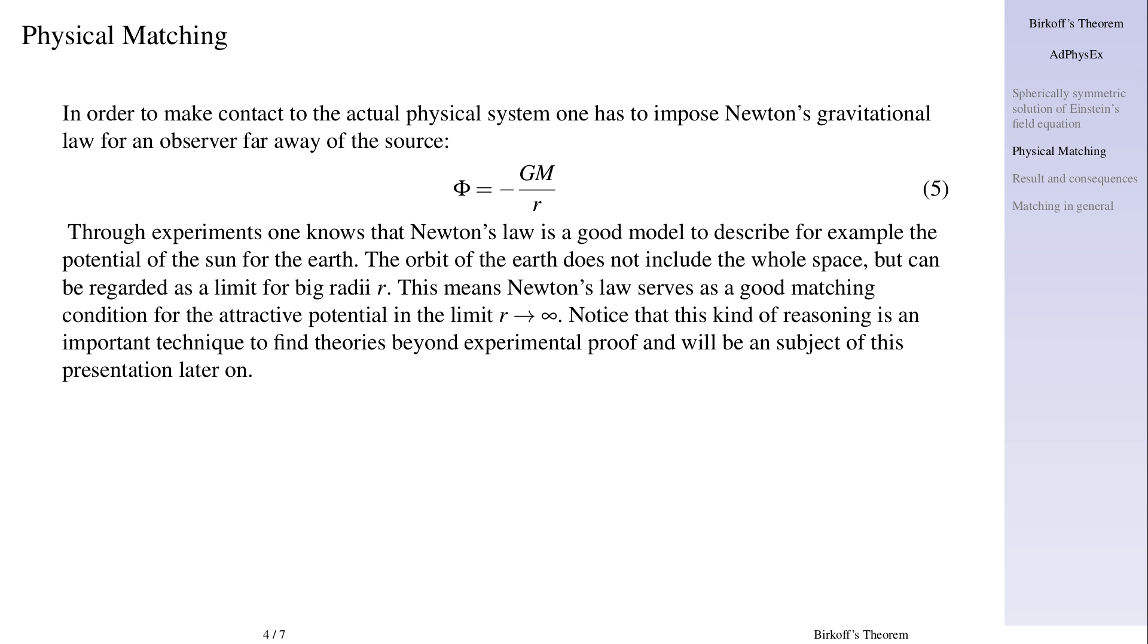Physical matching. In order to make contact to the actual physical system one has to impose Newton's gravitational law for an observer far away of the source: phi equals minus GM over r.